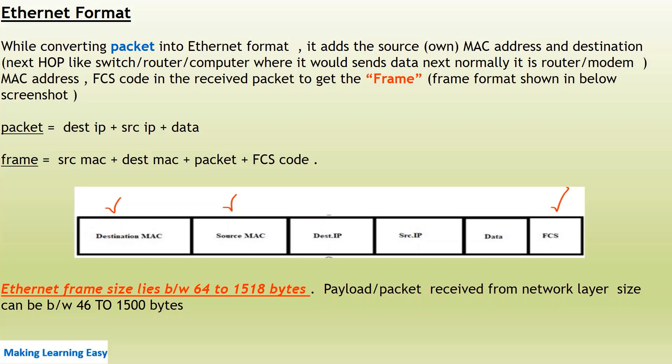The NIC also adds the FCS code to the packet to produce the frame. As shown in the screenshot, the packet contains the destination IP address, source IP address, and the data. The complete frame contains: source MAC address, destination MAC address, plus the packet, plus the FCS code. The destination IP, source IP, and data are received from the Network Layer; the Data Link Layer NIC adds the destination MAC address, source MAC address, and the FCS code.